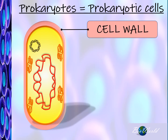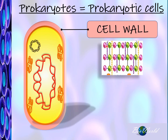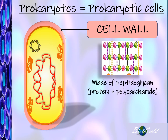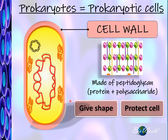Prokaryotes have a cell wall, just like plant cells. However, the components of the cell wall are not cellulose as in plant cells, but a chemical called peptidoglycan, which is a mixture of protein and polysaccharides. The function of the cell wall is similar to that in plant cells: to give shape to the prokaryote and to protect it.